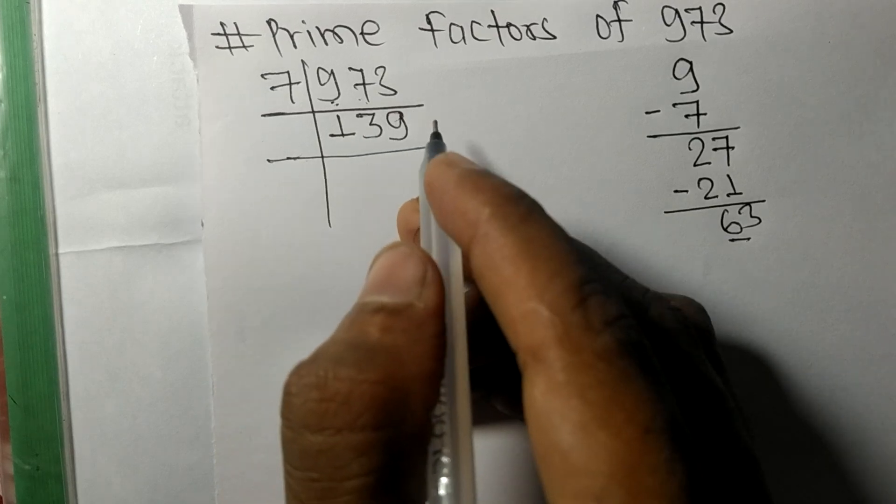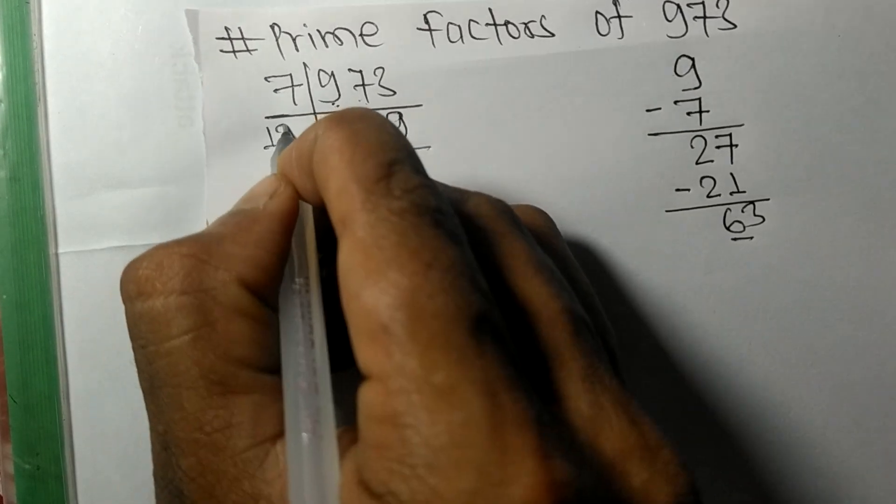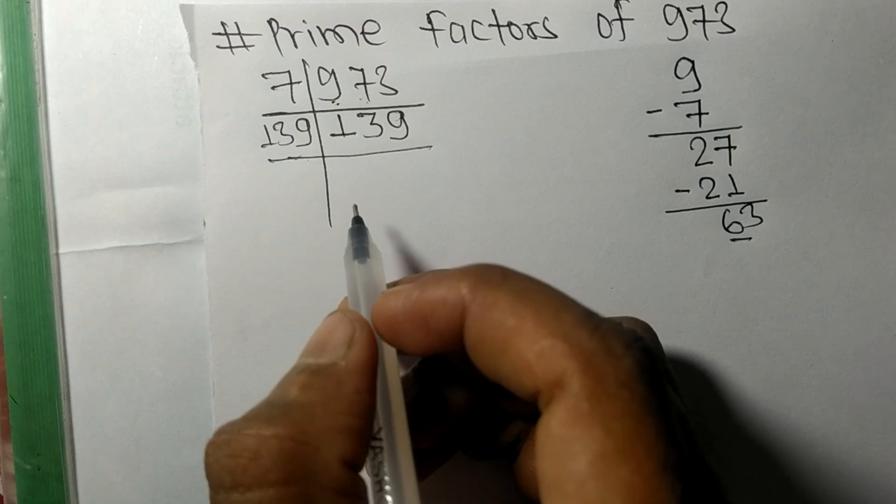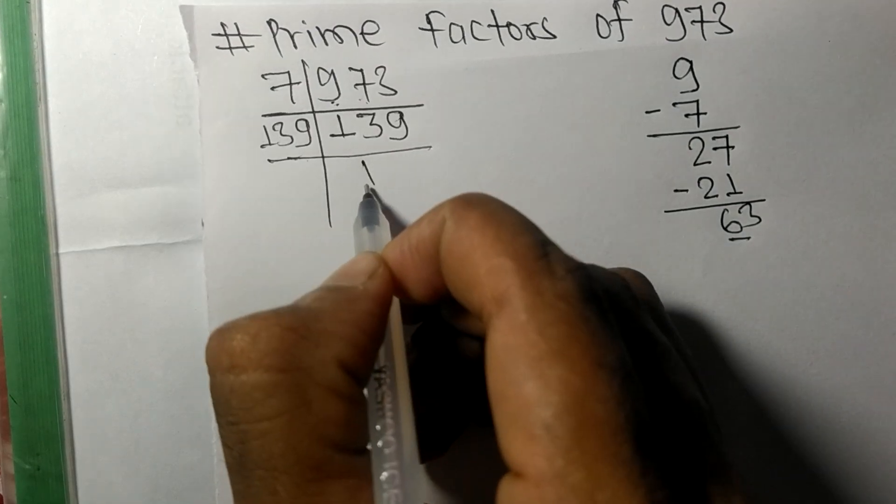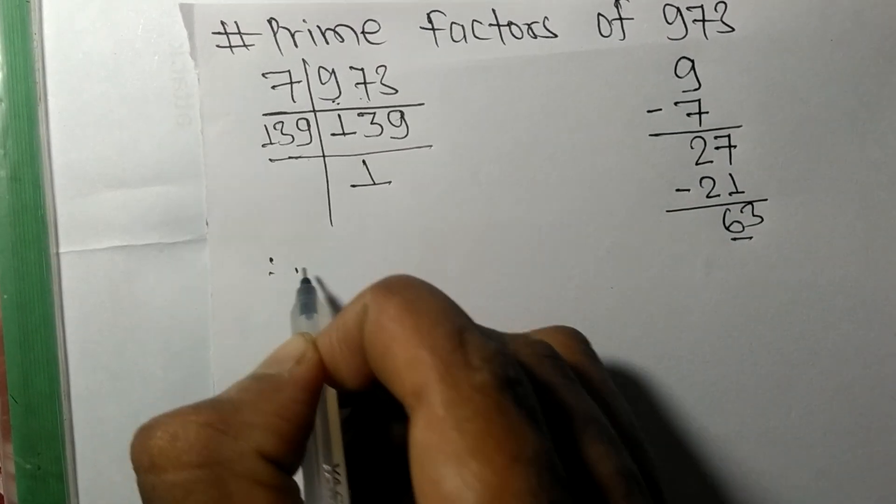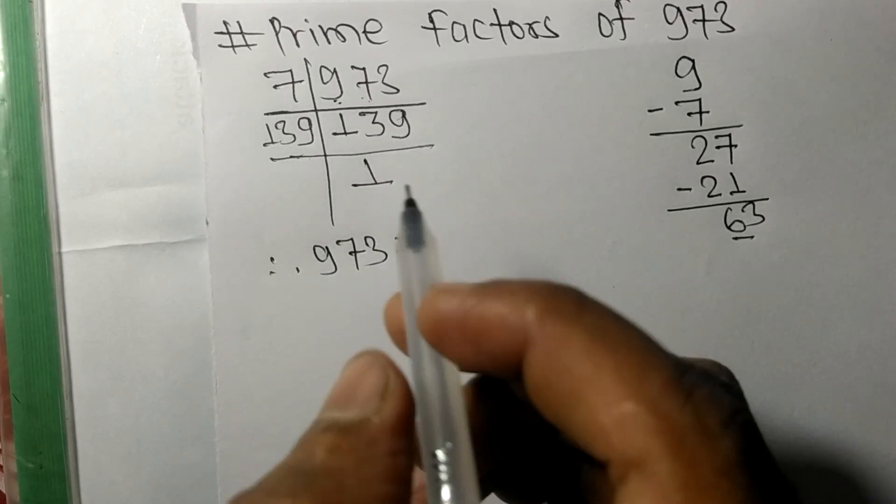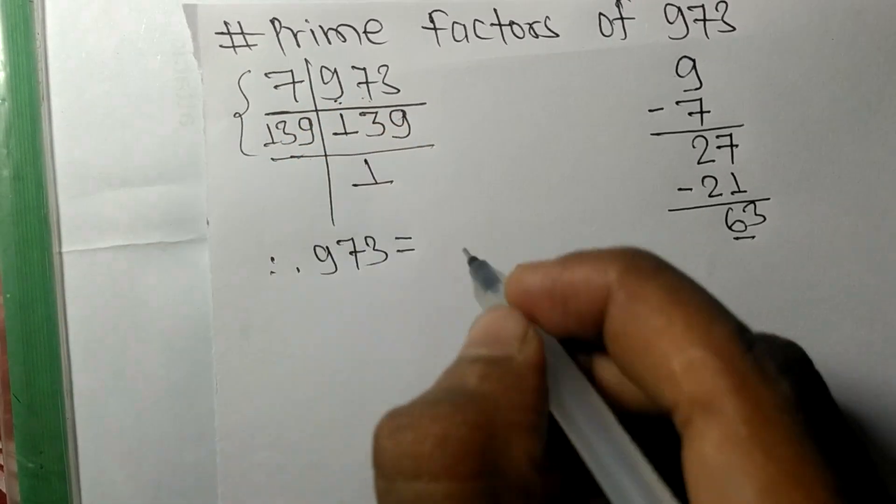And on dividing we get 1. Therefore 973 is equal to, from this side, 7 times 139.